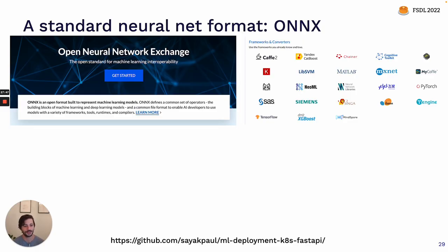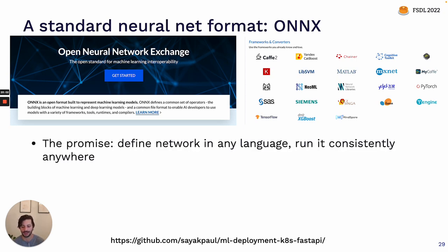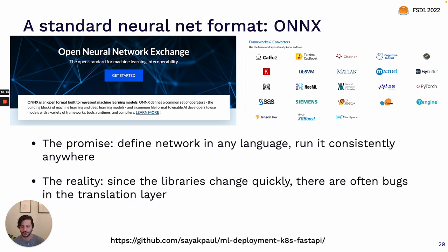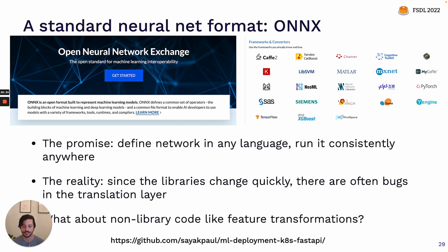The primary way people do this today is through the ONNX library — the Open Neural Network Exchange. The goal of ONNX is to be an interoperability standard for machine learning models, allowing you to define a neural network in any language and run it consistently anywhere, regardless of inference framework or hardware. That's the promise. The reality is that since the underlying libraries used to build these models are changing so quickly, there are often bugs in this translation layer, and it can create more problems than it solves. There's also an open problem: this doesn't really deal with non-library code like Python preprocessing functions that wrap PyTorch or TensorFlow graphs.